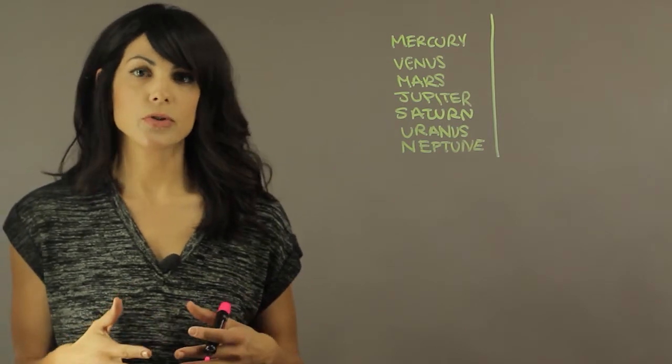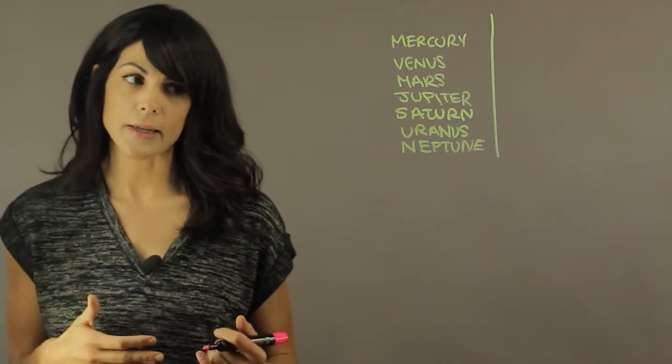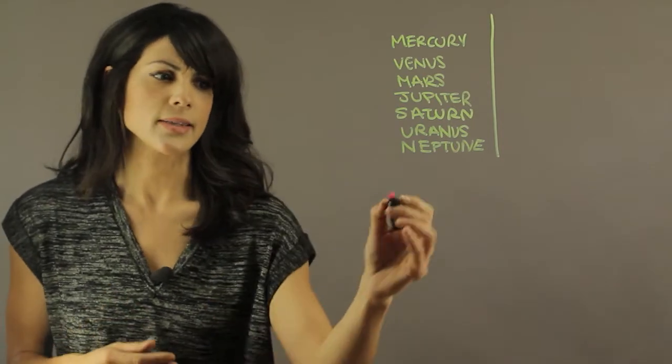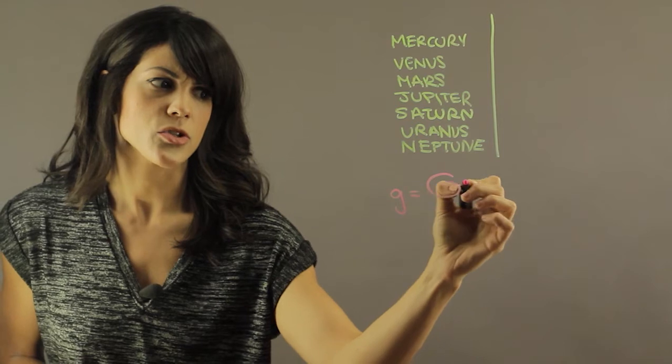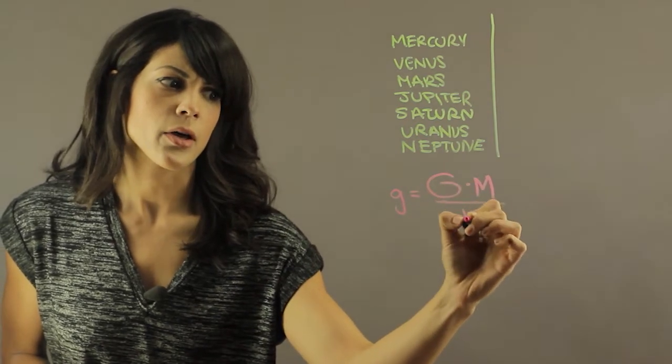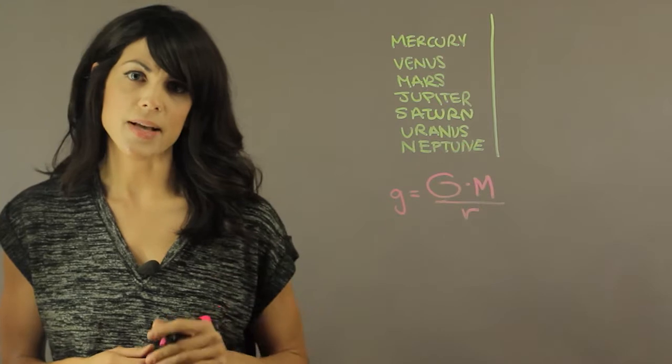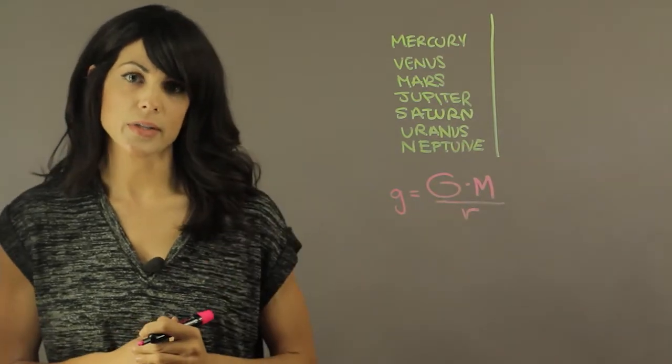The first thing you need to know is the surface gravity of each planet. The best way to calculate that is little g equals the gravitational constant G times M divided by r, where M is the mass of the planet and r is the radius of the planet.